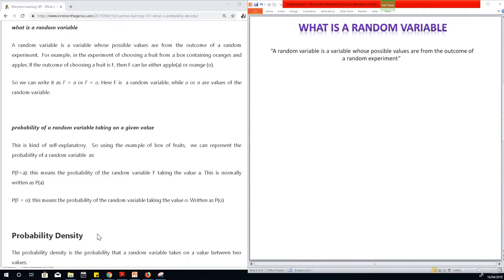So what is a random variable? The simple definition is a random variable is a variable whose possible values are from the outcome of a random experiment. When an experiment is carried out, this experiment could have possible outcomes, and these outcomes are possible values that a random variable can take.